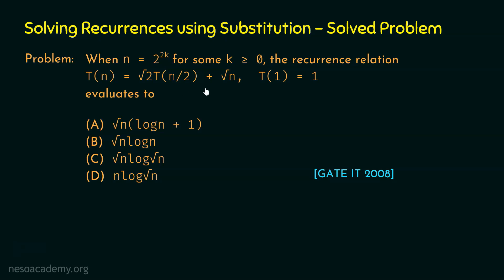We have the recurrence relation T(n) = √2·T(n/2) + √n as the recursive case, and T(1) = 1 as the base case. The condition that n = 2^(2k) for some k ≥ 0 is not going to contribute to the solution of this recurrence relation.